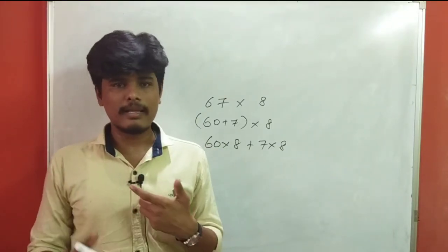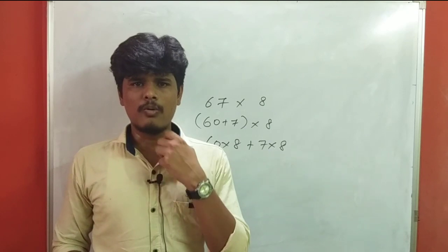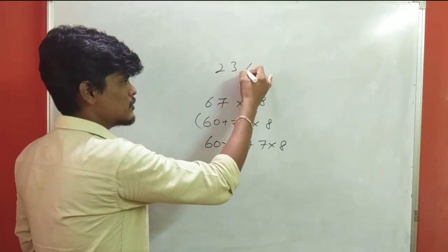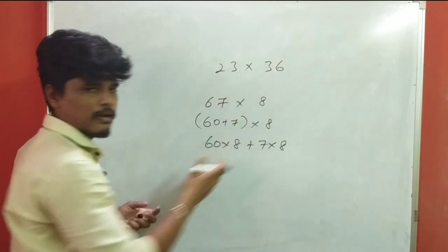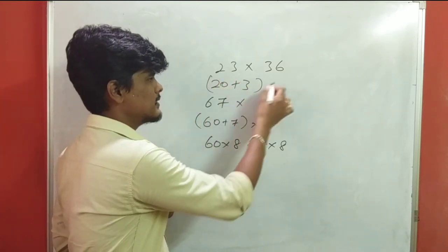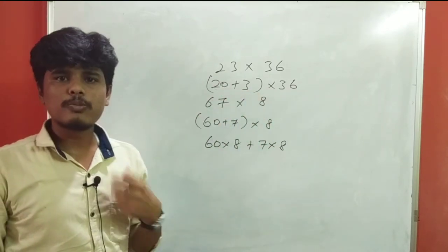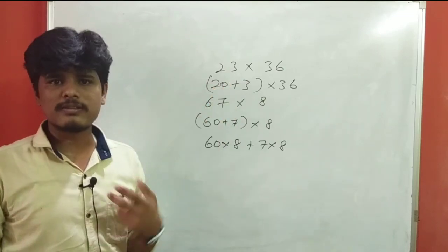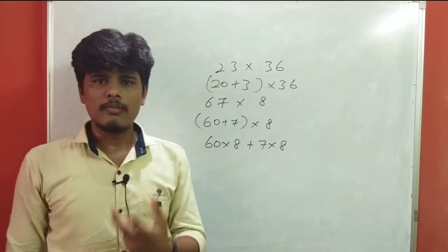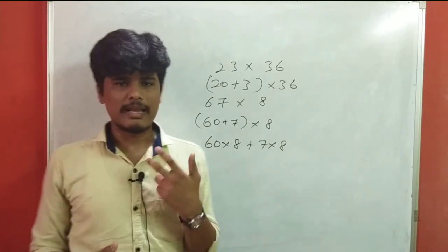If you have done a calculation, it will take a little bit of time at first. If you practice with random numbers, it will become easy. This is a two-digit number method. For example, 23 into 36: first do 36 into 20, which is 36 into 2 is 72, so 720. Then 3 into 36 is 108. Add 720 plus 108 equals 828. This is the multiplication calculation.